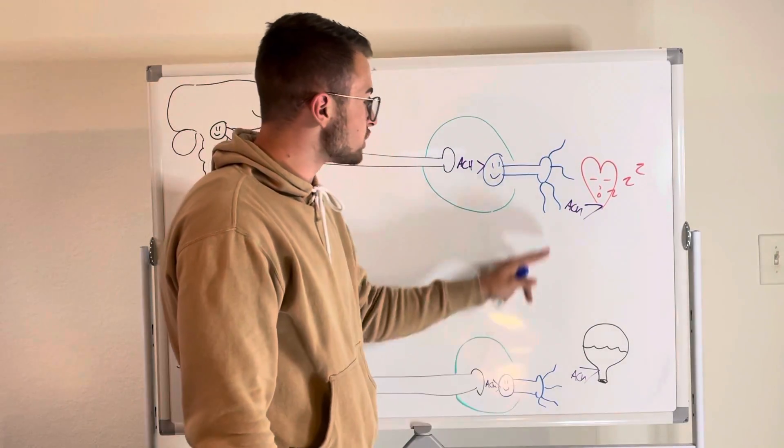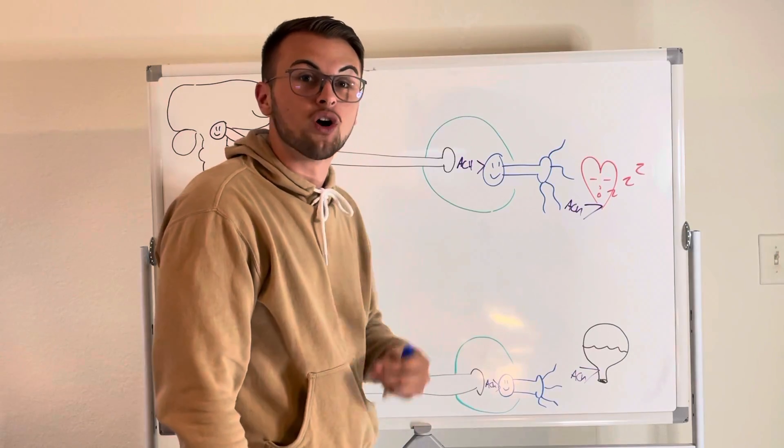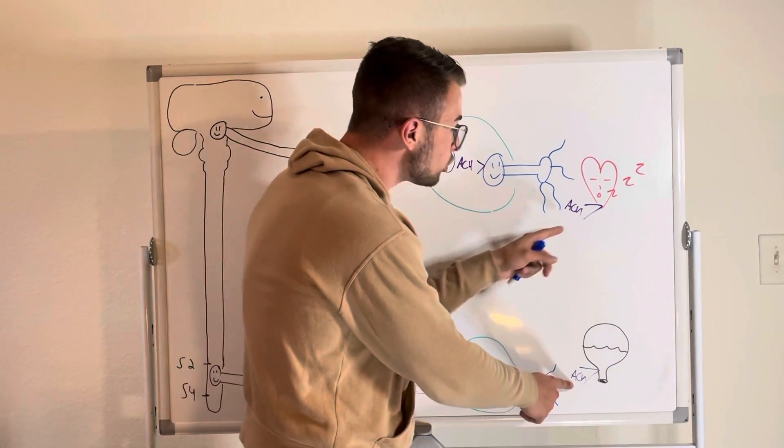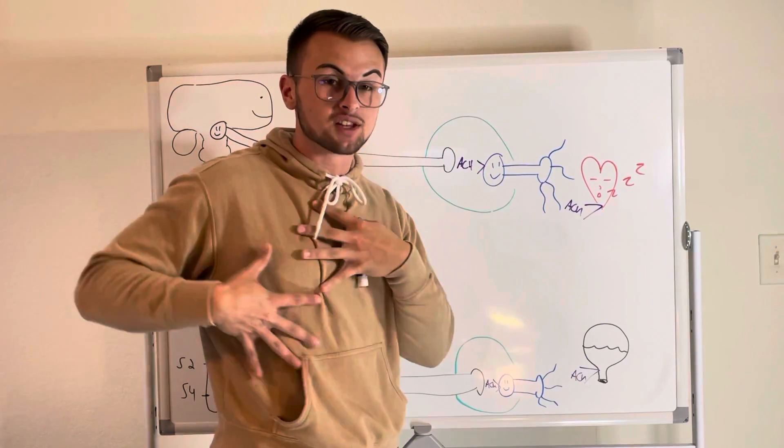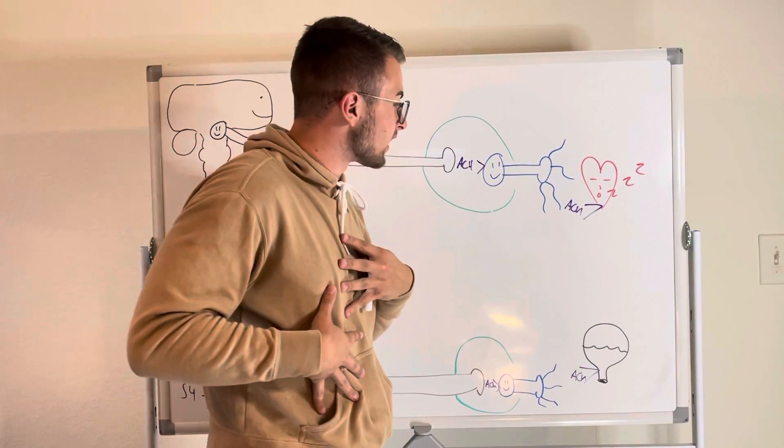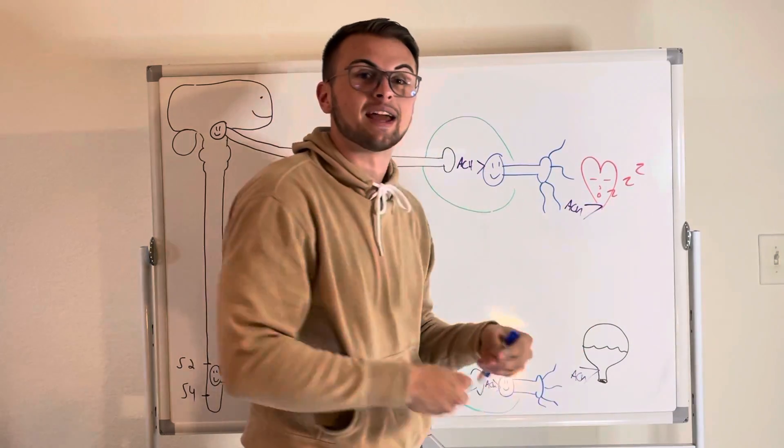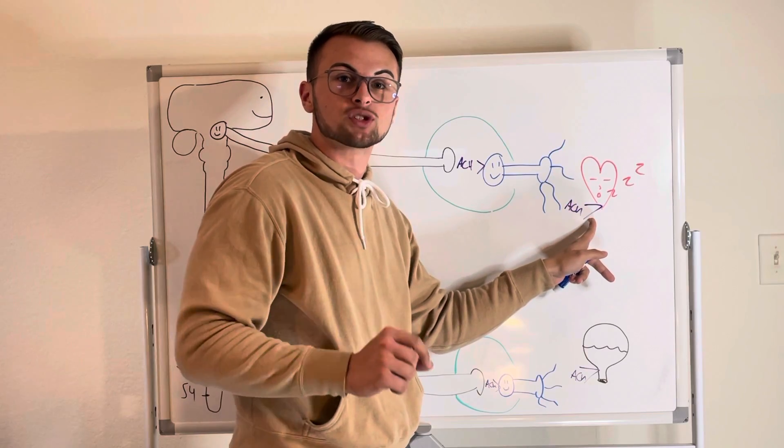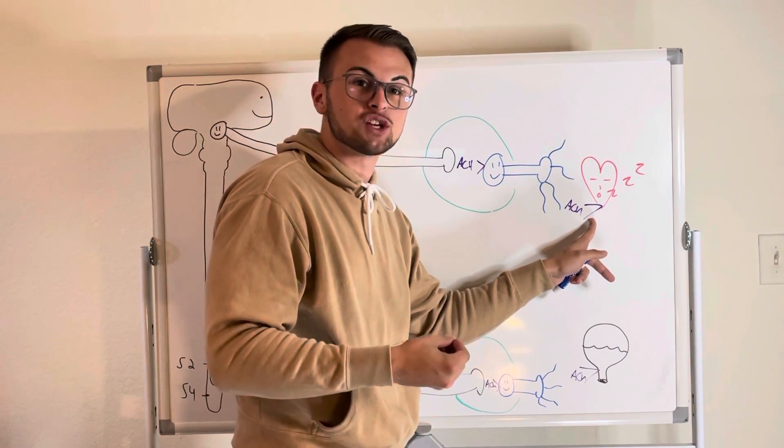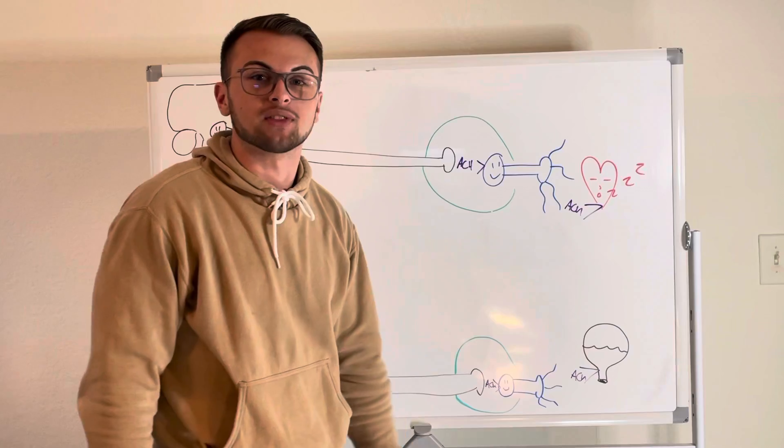Now when our postganglionic neuron fires an action potential of its own, it too will release acetylcholine from its beaded varicosities which lace over the affected tissue, and then this will result in a binding to our muscarinic receptors, and these receptors are what cause the activation of the desired parasympathetic effects.